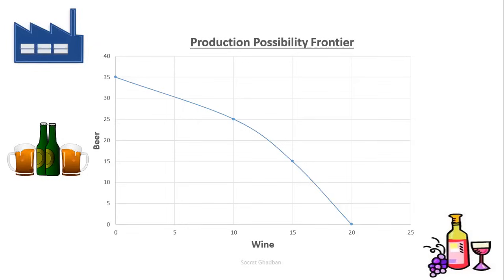All the points below and to the left of the curve represent combinations of bottles of wine and beer that are possible for the firm given the resources available and existing technology. Although the firm may be operating with full employment of its land, labor, and capital resources, it may still be operating inside its PPF at a point such as A. The firm is using its resources inefficiently.